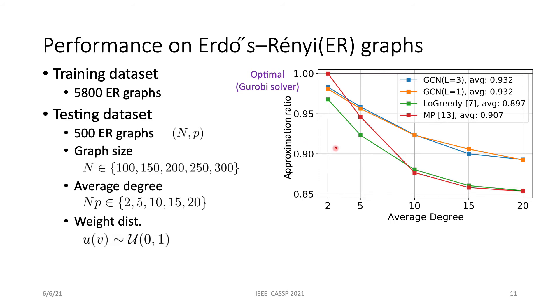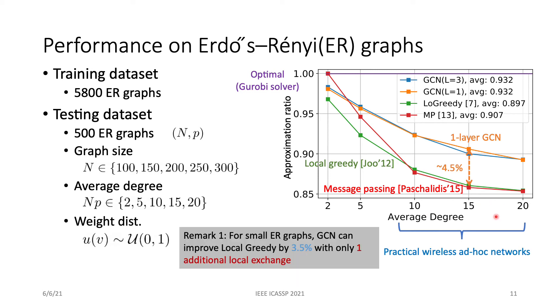If we look at the performance of the heuristics, they all perform worse for higher average degree. Also notice that the gap between GCNs and the baselines is larger for higher average degree. This is also the range of realistic wireless ad-hoc networks. The first remark is that the GCNs can improve local greedy by 3.5% with only one additional local exchange. We also found that GCNs with one layer perform similarly with GCNs with three layers.